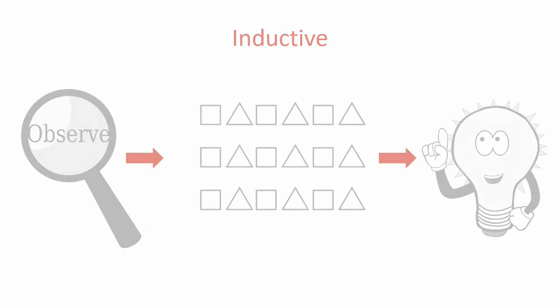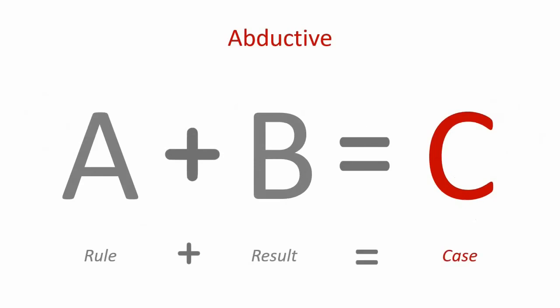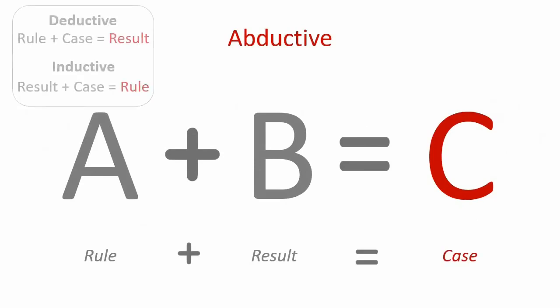Now let's focus on what A plus B equals C means in a research study that follows the abductive approach. A is your rule, B your result, and C your case. If you passed primary school mathematics, you may notice a pattern in the equation — same constructs, just a different order. The order of the equation is giving you an indication of the systematic approach or process you need to follow in order to derive your contribution to knowledge.